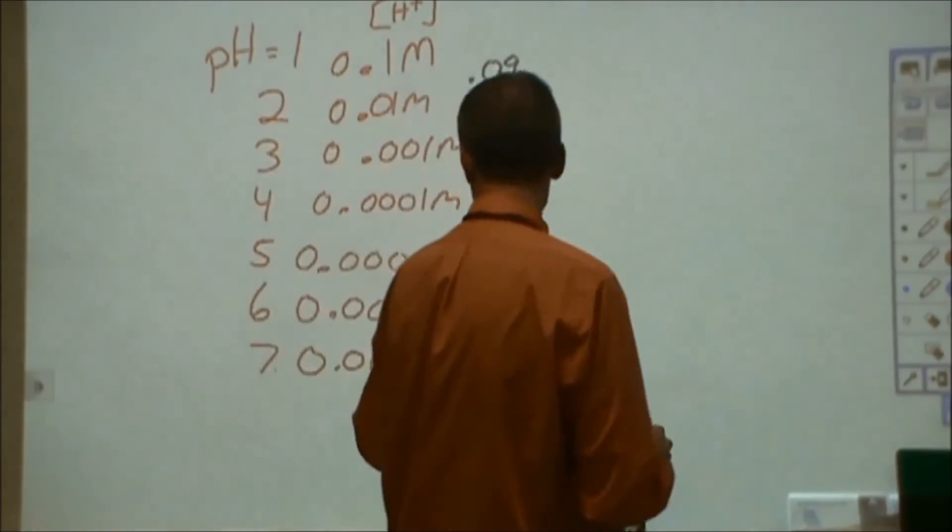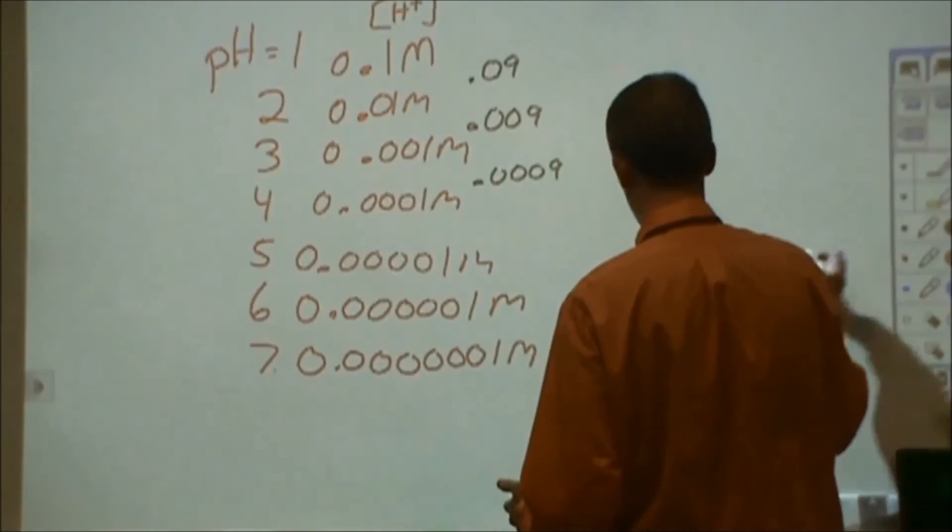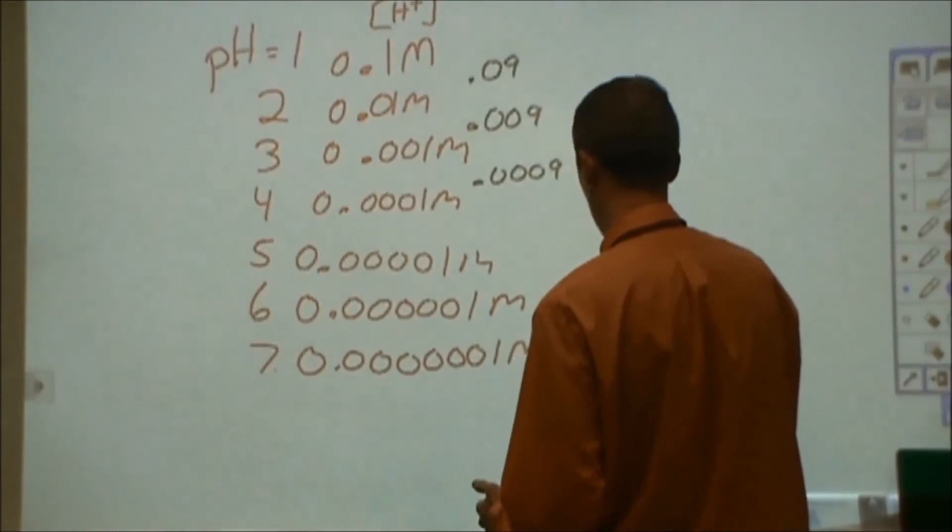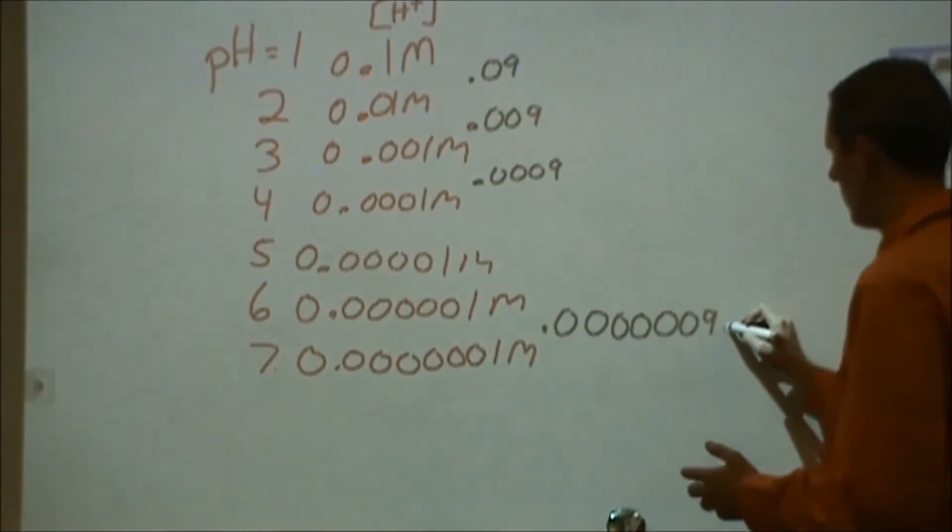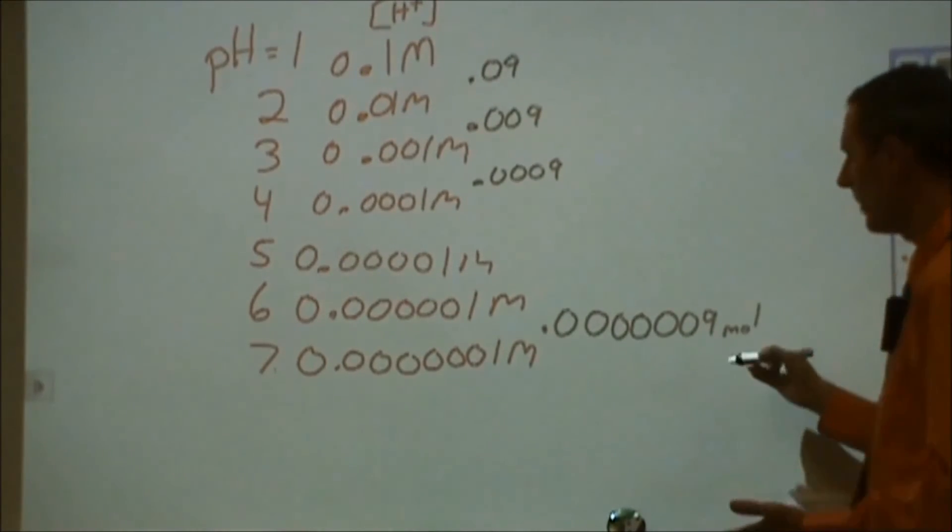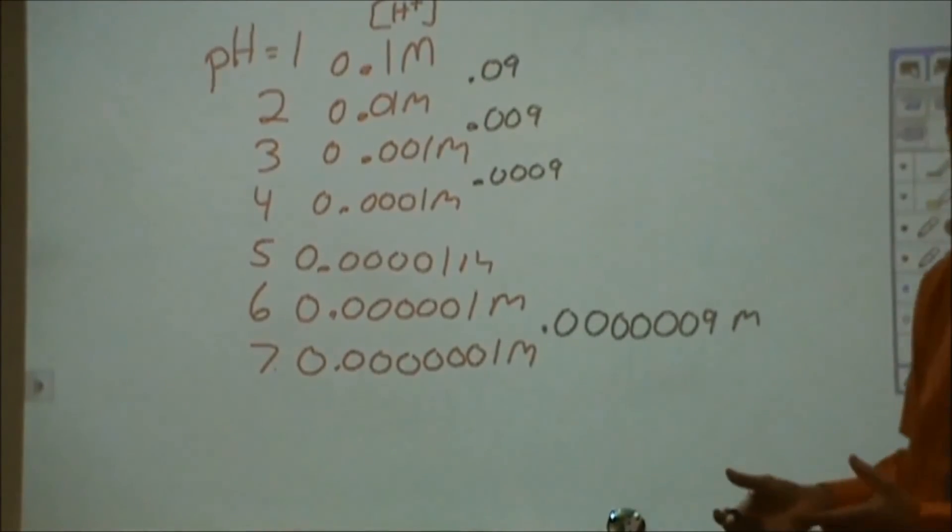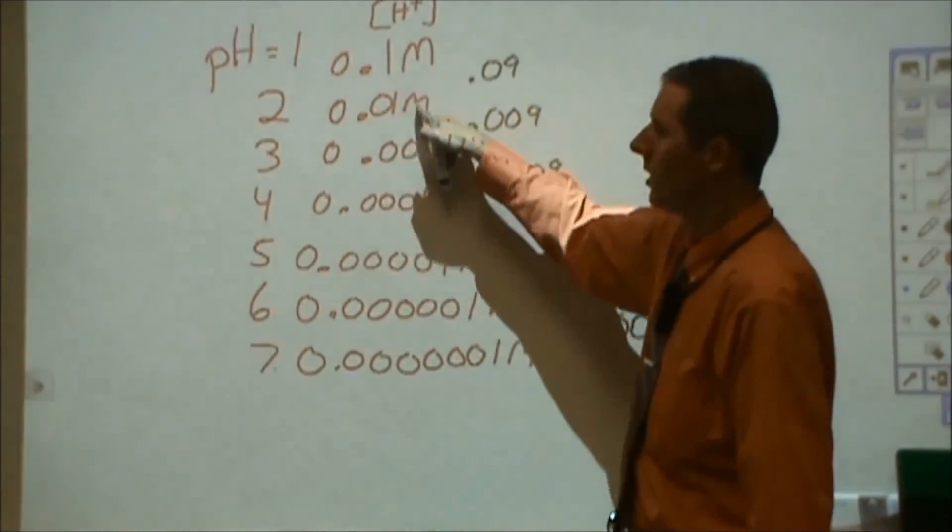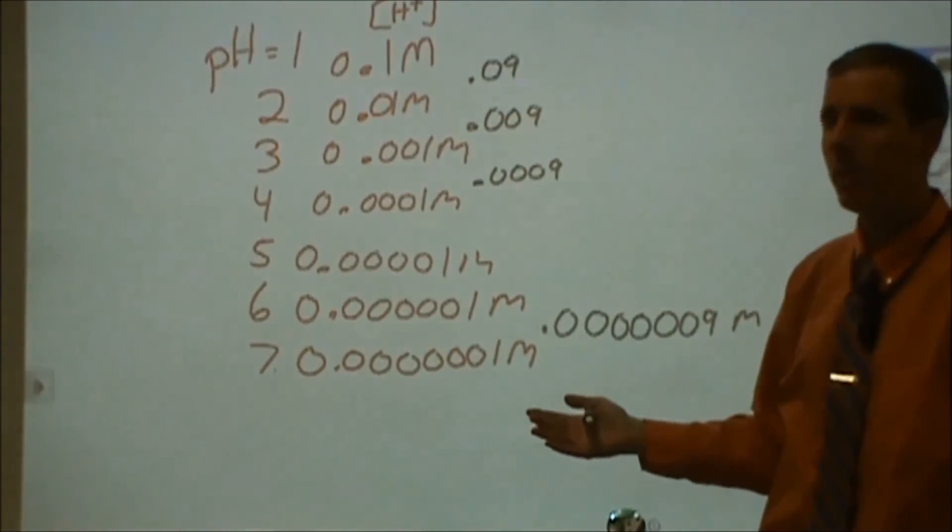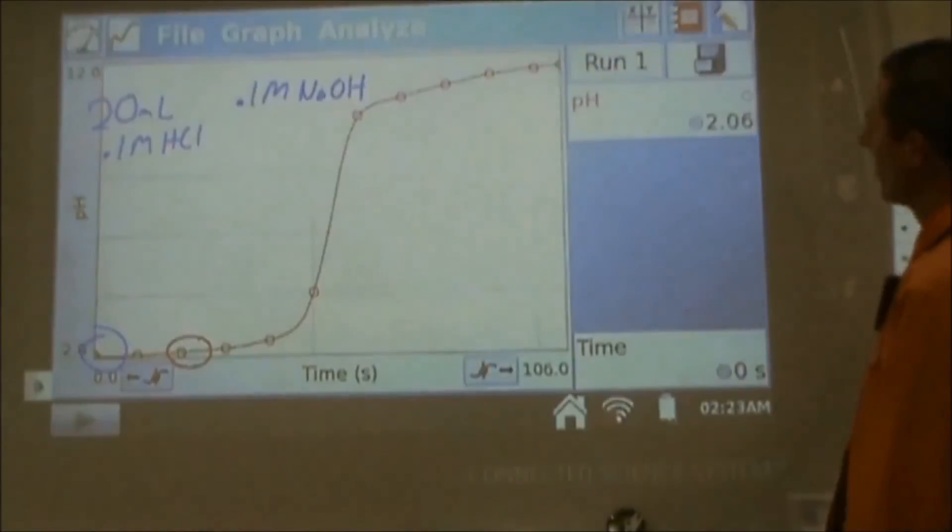And to get from here to here, 1, 2, 3, 4, 5, so I only need 0.0000009 moles of molarity to change, to get from there to there. That might be less than a drop of this, to be able to go from here to here. Whereas this might be 20 milliliters. So I'm not looking at a linear scale of change when I look at this.